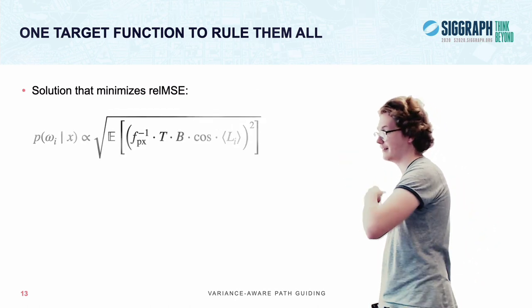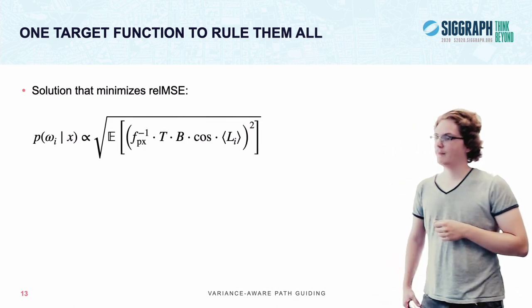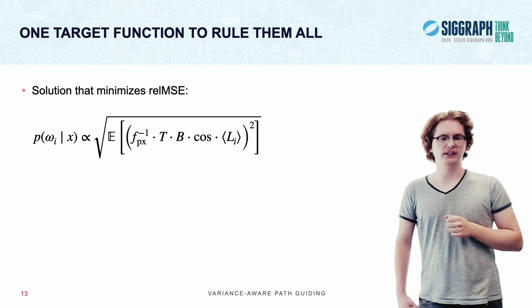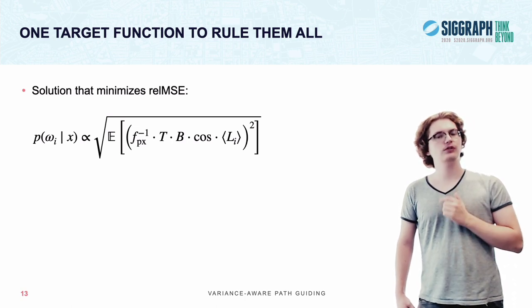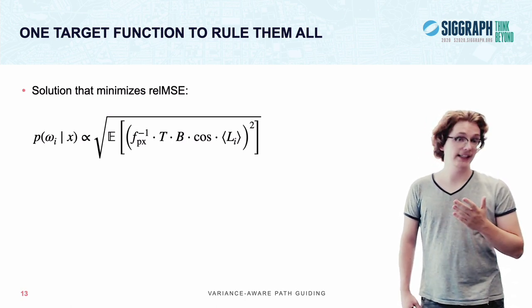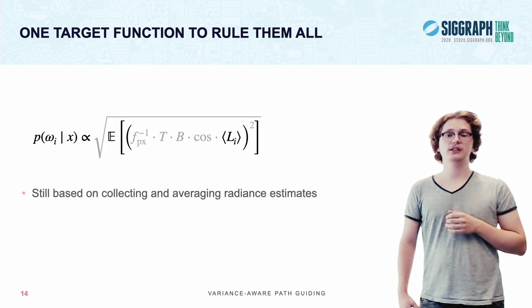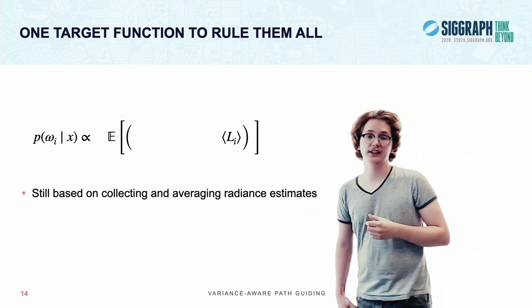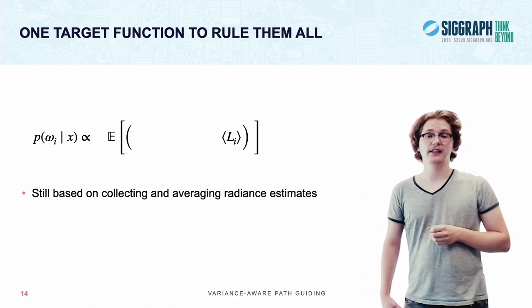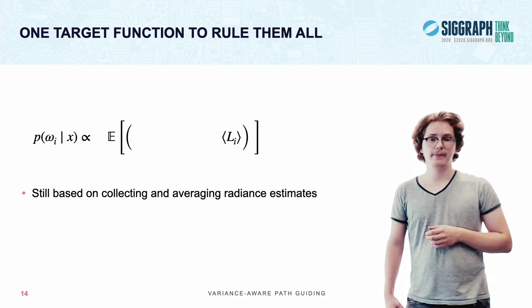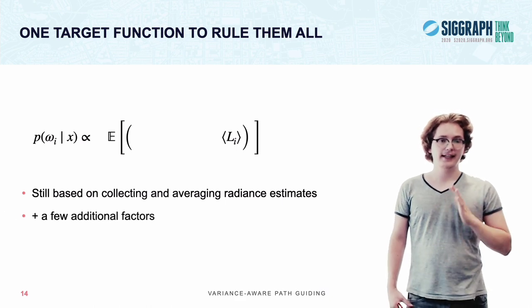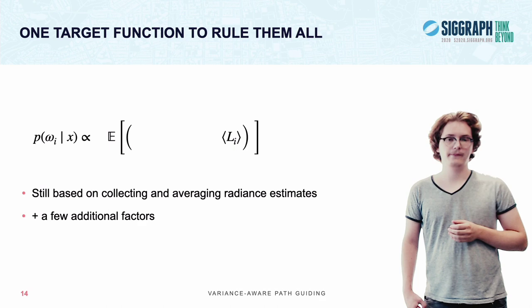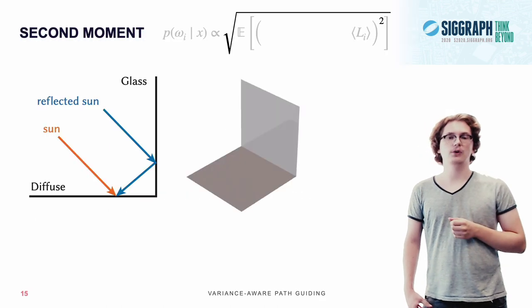And here it is. Now I agree it looks quite overwhelming, there's lots of factors going on here. So I'd like to draw your attention to the fact that, at its core, this is still based on the same idea of collecting radiance estimates and then averaging them, like many popular guiding algorithms do today. However, there's a few additional factors. And I'd like to take the time to motivate each of them one by one, starting with the second moment.